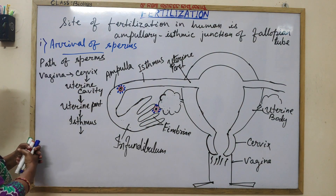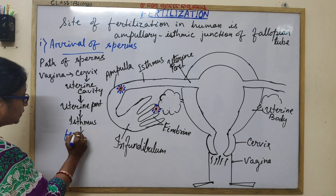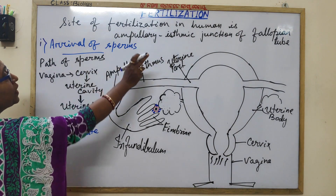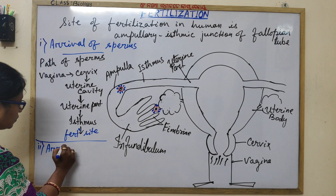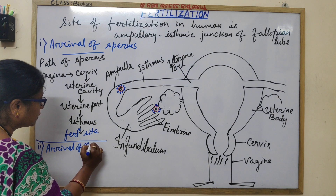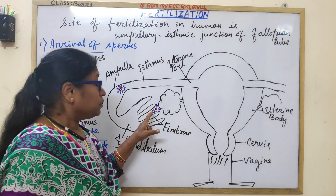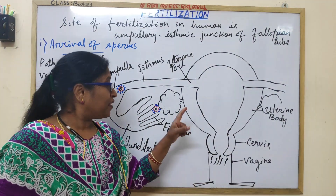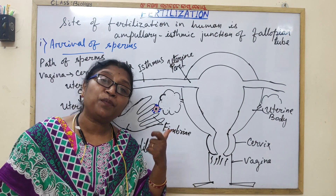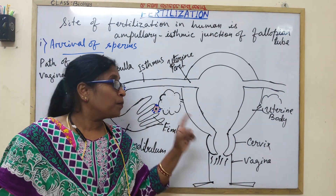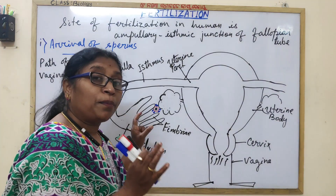Then only fertilization is possible. Now, the arrival of the secondary oocyte: the secondary oocyte is released from the ruptured ovarian follicle — the Graafian follicle — at the LH surge, from one of the ovaries, and it is received by the nearby fallopian tube.